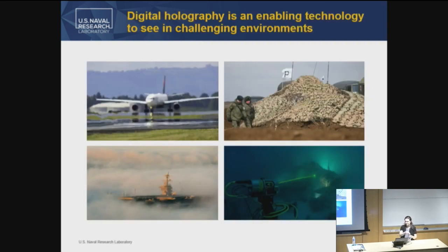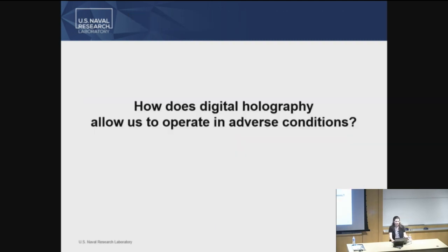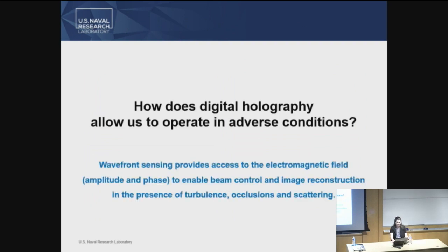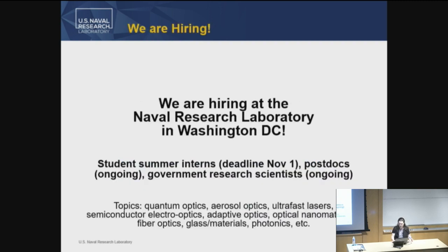To wrap up: we really care about these different imaging environments — turbulence, obscurations, and degraded environments such as fog or turbid water. Digital holography allows us to operate in adverse conditions because it gives us access to the electromagnetic field — the amplitude and phase — which allows us to have beam control and do image reconstruction in the presence of turbulence, occlusions, and scattering. Thank you, and we are hiring — whether you're interested in internships, post-docs, or a future position as a government research scientist, I'm happy to discuss that.